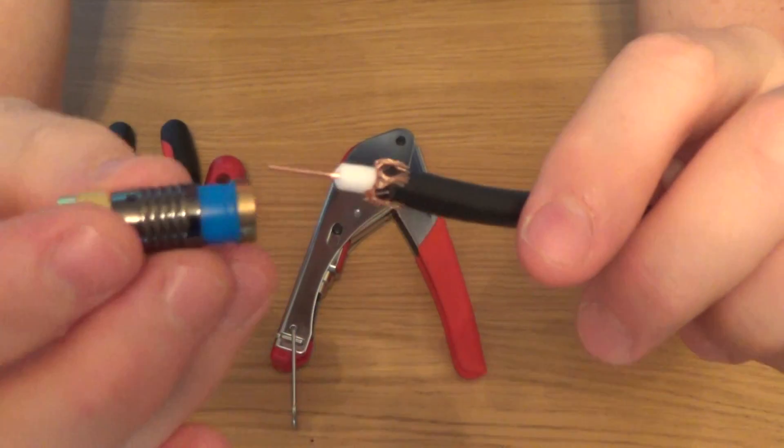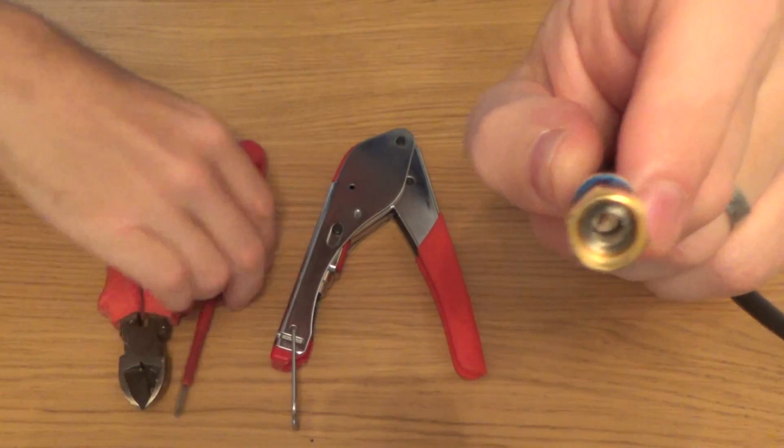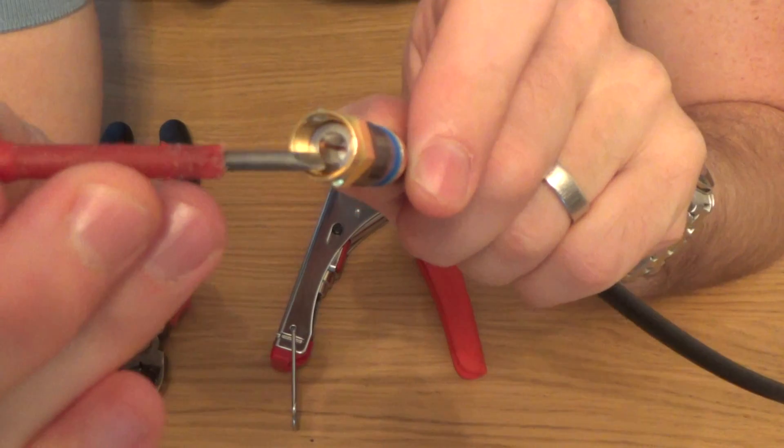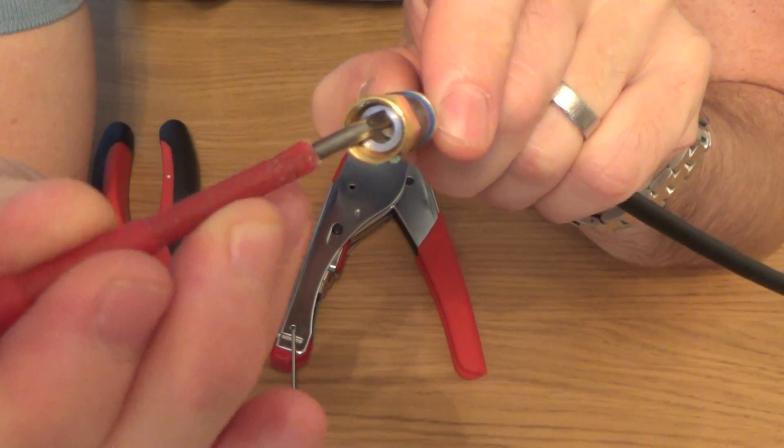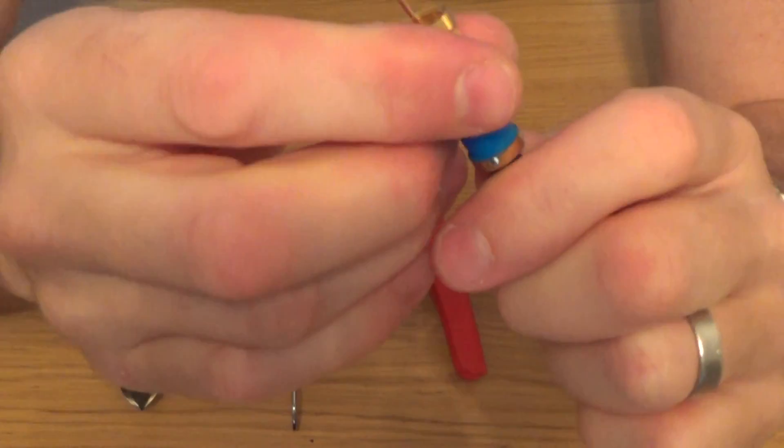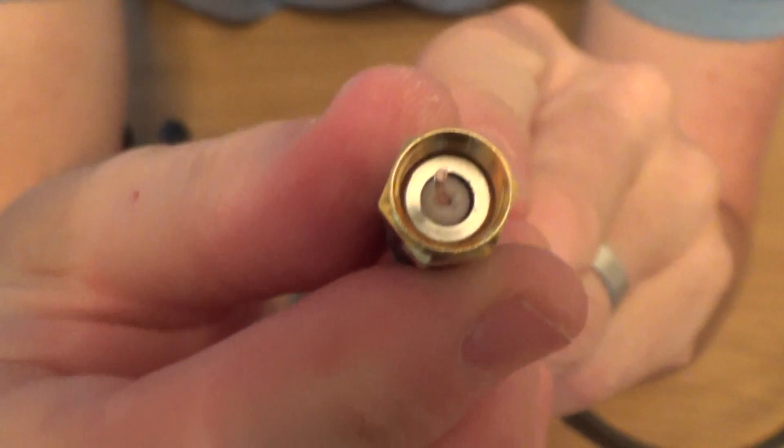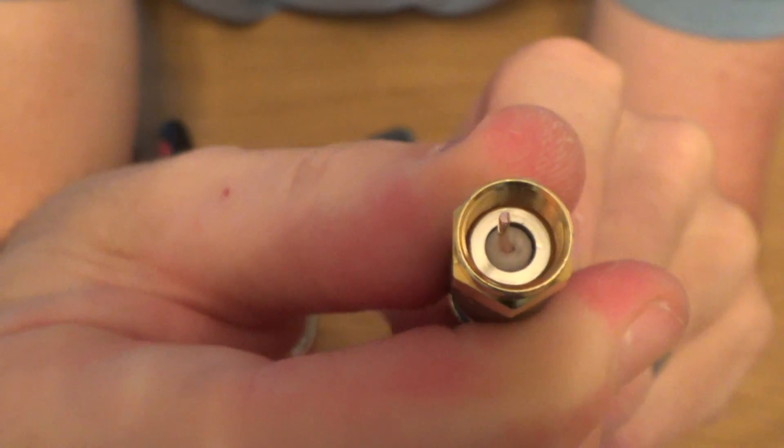Then you get your connector. Then you need to slide it on until the white dielectric, the foam in the middle, is flush with the shoulder in here. So you twist it on, if you have a look, you can see the foam is just flush with that middle bit.